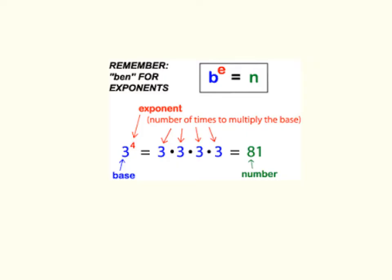Here, we are writing out that we are multiplying 3 by itself 1, 2, 3, 4 times. When we multiply 3 times 3 times 3 times 3, we get 81. You can think of this as the N in the acronym BEN. It is also our product.